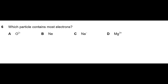The next question asks which particle contains the most electrons. I have explained many times how to calculate the number of protons, electrons, and neutrons in an atom and an ion, so I am leaving this question for you. Calculate it and write your answer in the comment box, and I will reply whether you are right or wrong so you can assess your understanding.